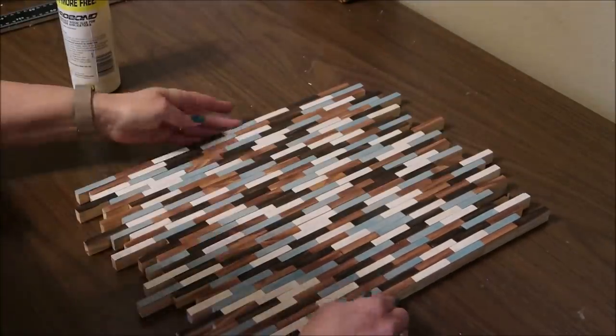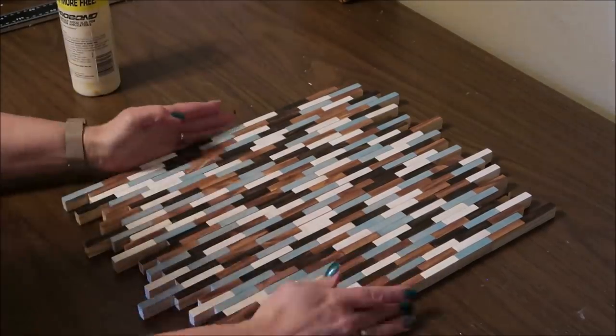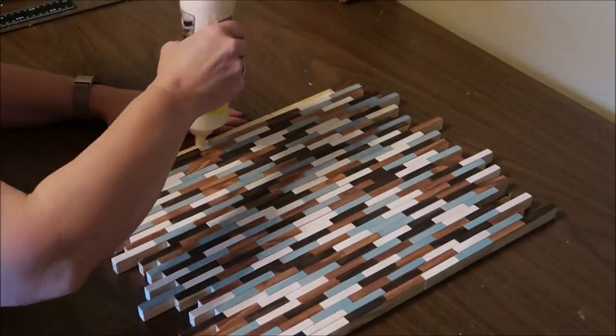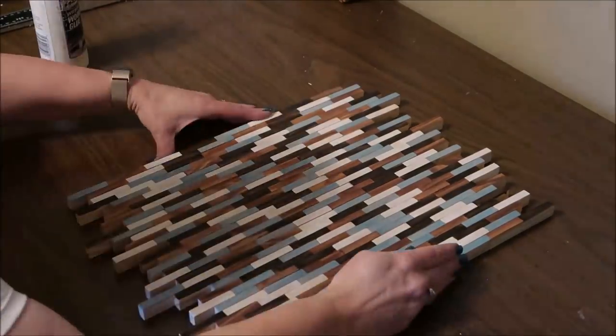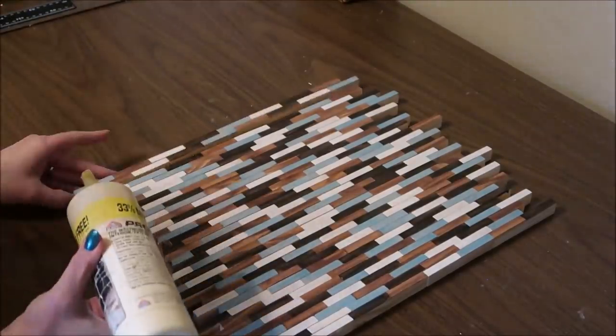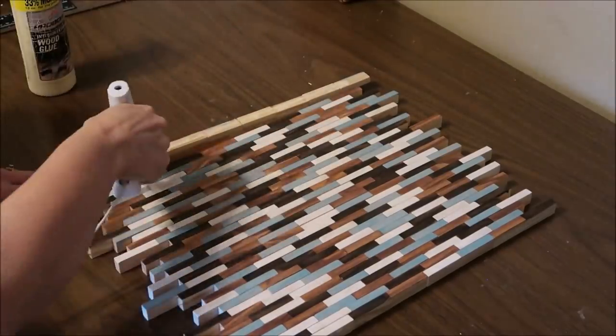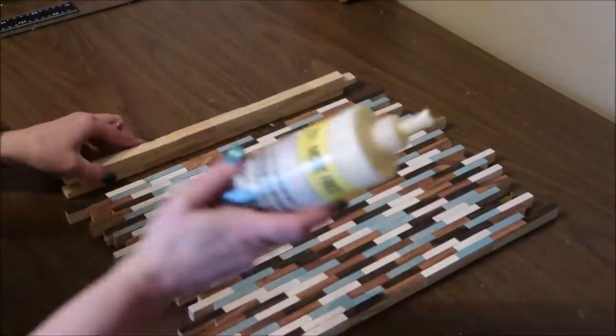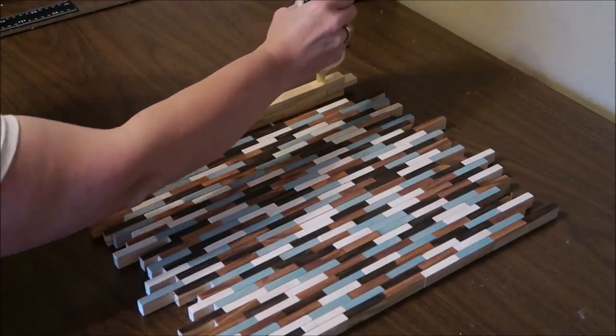Once I had all of my rows glued together, then I lined them up. And the inspiration piece just was a square. And I wanted to make this a little more interesting. So I decided to have my rows just all at different lengths. I don't know how to explain that. But as you can see here, they are not flush on the top and the bottom. And I like the way that looks. So then I'm going to take my wood glue and add that down the edge of the first row.